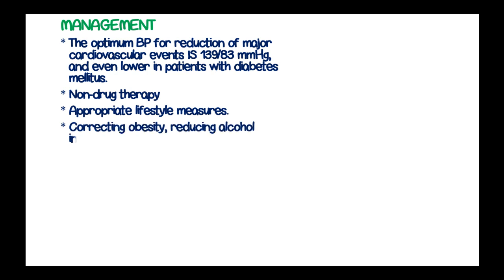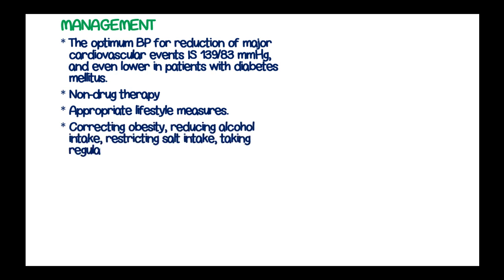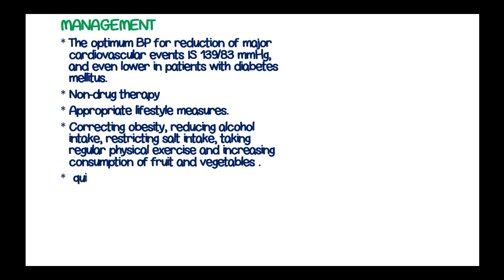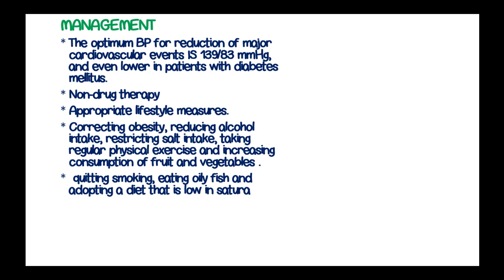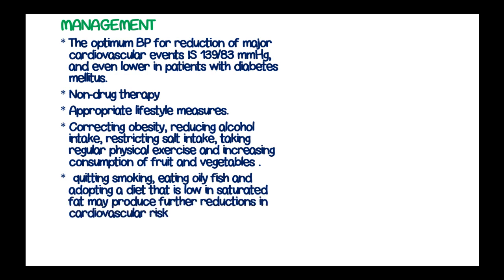Appropriate lifestyle measures include correcting obesity, reducing alcohol intake, restricting salt intake, taking regular physical exercise, and increasing consumption of fruits and vegetables. Quitting smoking, eating oily fish, and adopting a diet low in saturated fat may produce a further reduction in cardiovascular risk in hypertensive patients.